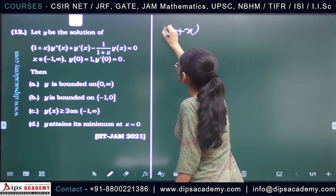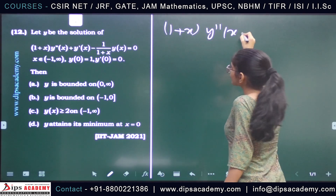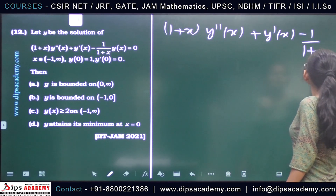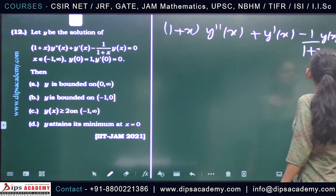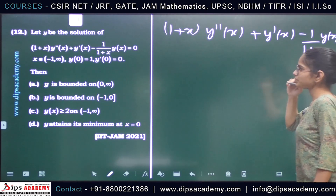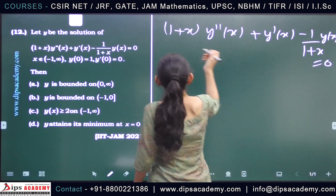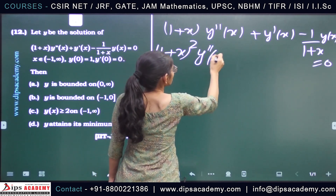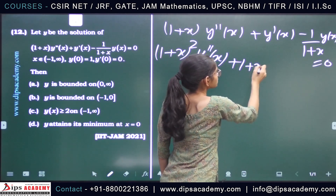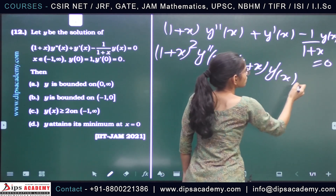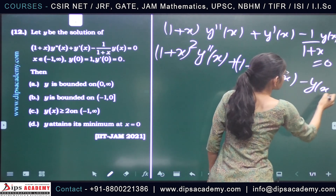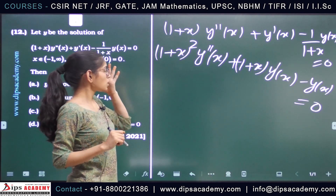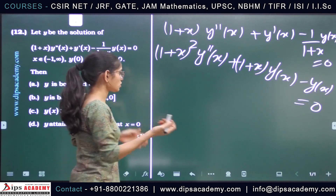The given differential equation is (1+x)y''(x) + y'(x) - 1/(1+x) · y(x) = 0. Rearranging the terms, we get y''(x) + (1+x)y'(x) - y(x) = 0. By observing this, we can see that this is of the form of the Cauchy-Euler equation.